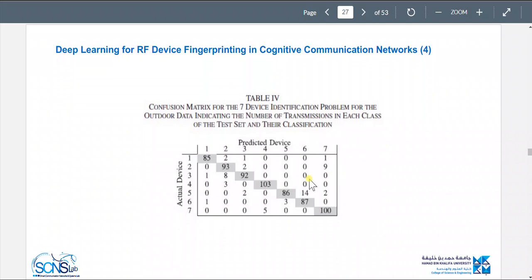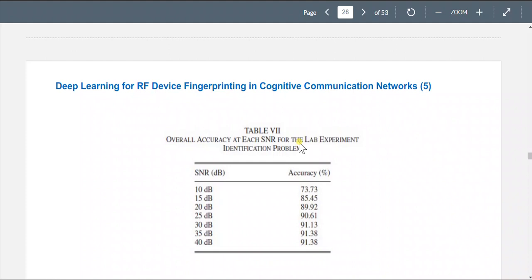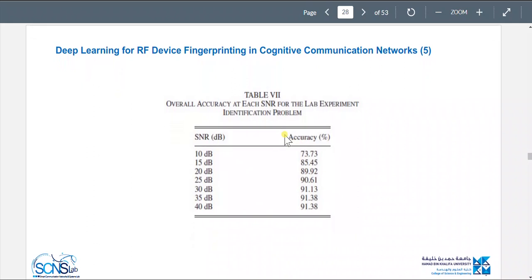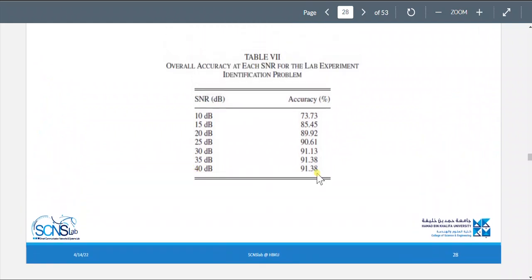So we have the confusion matrix and this would be the result. So here we have the actual device like device one, and here we have the predicted device like device one. And we are predicting device one is 185 times, but predicting device one is device two two times, predicting it as device three is one time, and as device seven is one time. Here we have 100 percent, 100 times it's classified correctly, and five times as device four incorrectly. This is how to read the classification. We have the confusion matrix, then we have an accuracy for each SNR value. So 40 decibels we have higher accuracy.